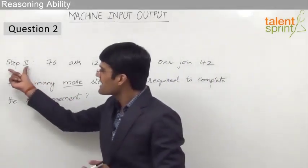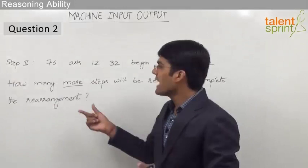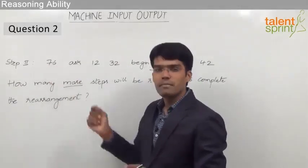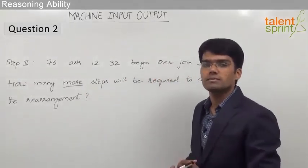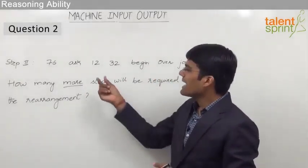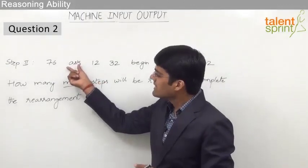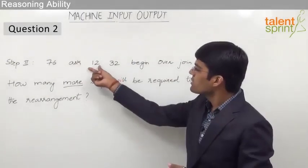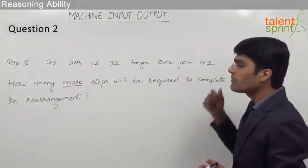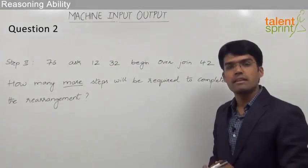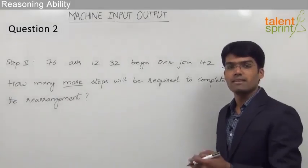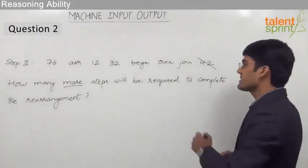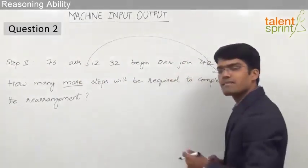As this is step 2, it is obvious that the first two elements are in the correct positions. So we need not disturb them and now let us think about the third position. As we know that in the third position, that is after ask, we should have a number and that number should be one among 12, 32 or 42. And since we are following the descending order of numbers, we very well understand that the third position should be taken by 42. So let us strike off 42 and just bring it here after ask.